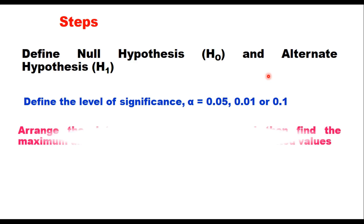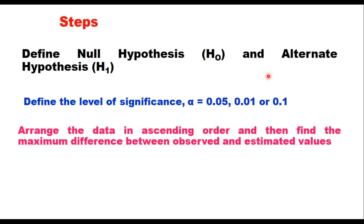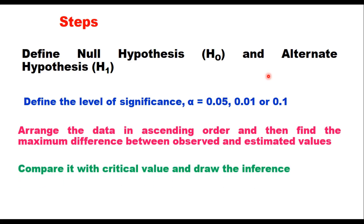Then arrange the data in ascending order and find the maximum difference between the observed and estimated values. Compare it with the critical value and then draw the inferences. These are the four steps to apply the KS test to any data.